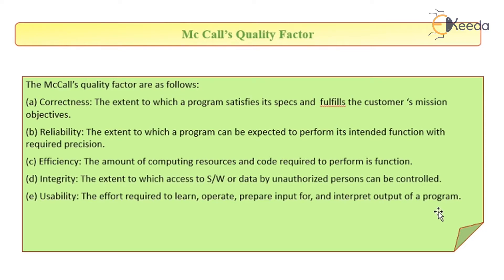Reliability: the extent to which a program can be expected to perform its intended function with required precision. For example, if I am designing a server, I expect it to be accessible 24 by 7 and to provide service to up to 10 million users. So it is expected to perform its function 24 by 7 and to serve 10 million users. Only if a server meets these constraints and performs its intended function, it is said to be reliable.